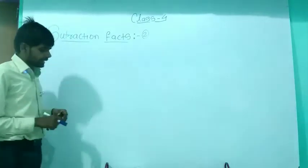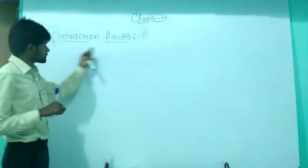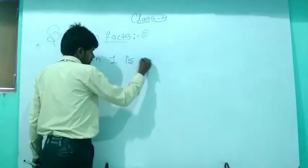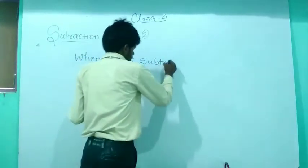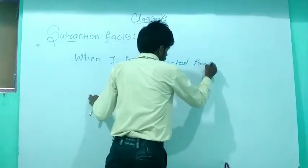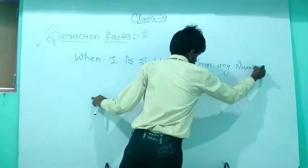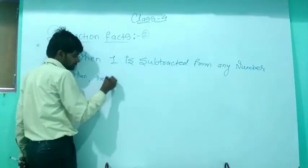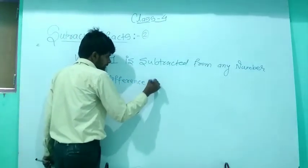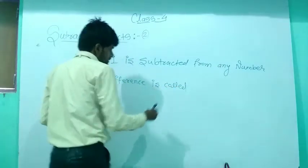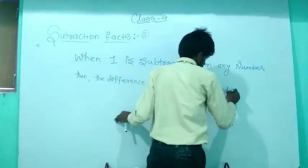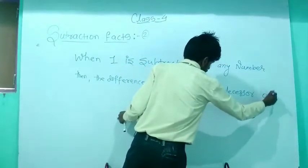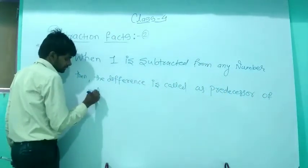Let's understand the second subtraction fact. When 1 is subtracted from any number, the difference is called the predecessor of that number.